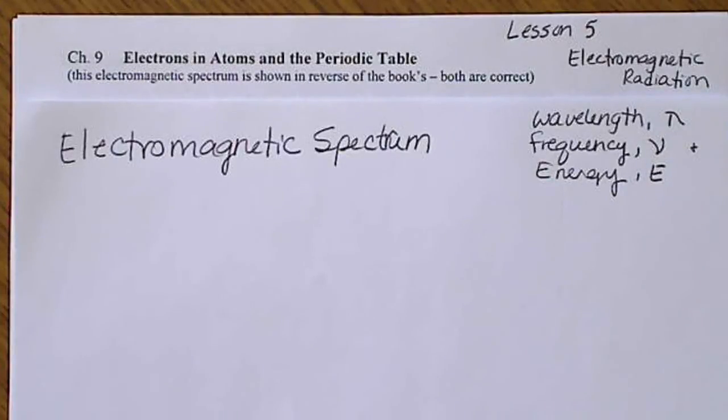Before we begin the discussion of electrons in atoms, we are going to take a look at a type of energy called electromagnetic energy. Your book has a picture of this type of energy on page 288.